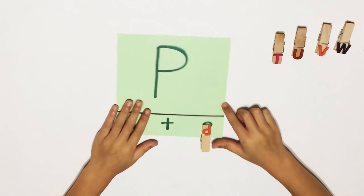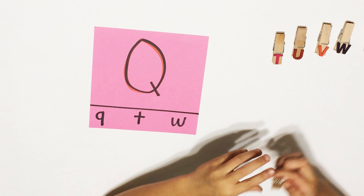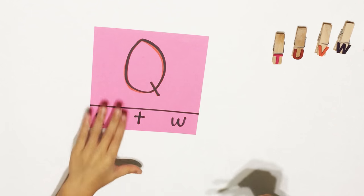P for panda. Q, lowercase Q. Q for queen.